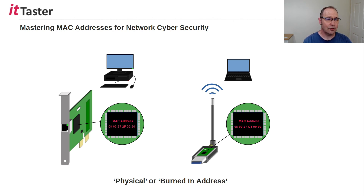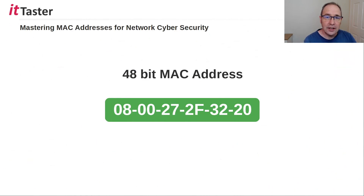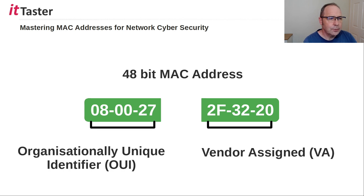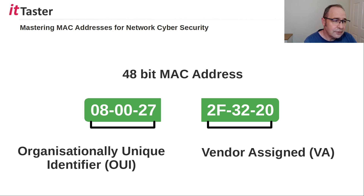Because MAC addresses are set by the manufacturer, we don't need to learn how to assign them, but we do need to know what they look like. A MAC address is a 48-bit address made up of a series of hexadecimal digits. A MAC address is made up of two parts. The first group of six digits are known as the Organizationally Unique Identifier, or OUI, and this part identifies the NIC manufacturer. The last six digits are a unique value, also assigned by the NIC manufacturer, to uniquely identify the network interface card. So no two MAC addresses should ever be the same.